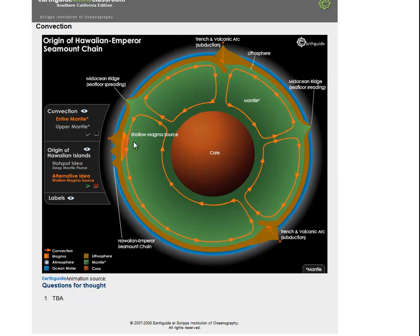There's an alternate view of this one where we just get a shallow magma blob, which does the same thing, feeds these volcanoes one after another, making new volcanoes, making the rest of the volcanoes extinct.